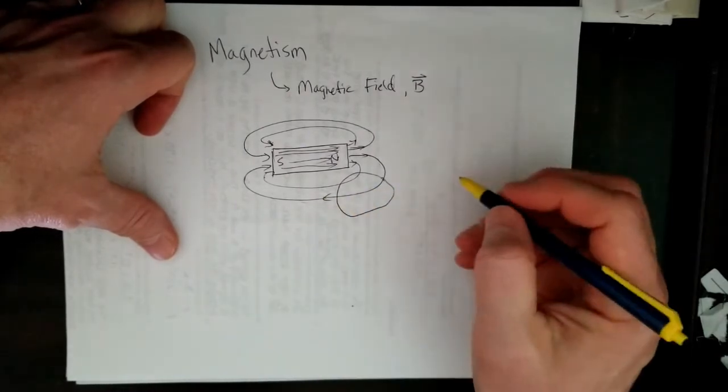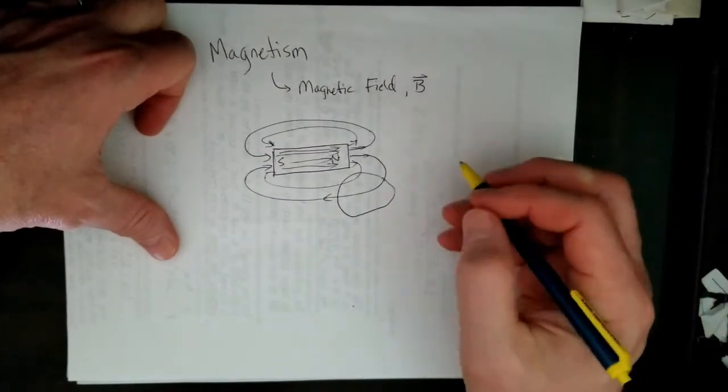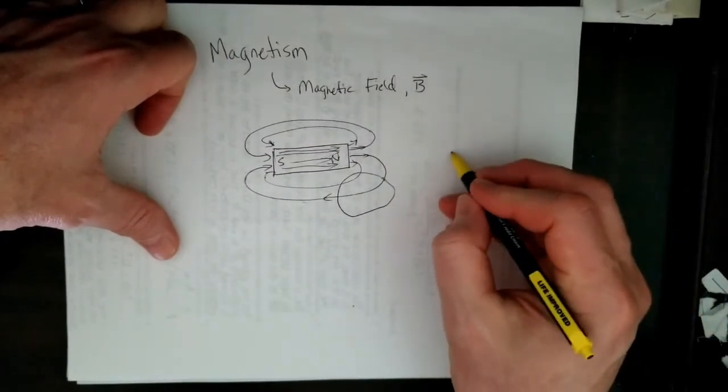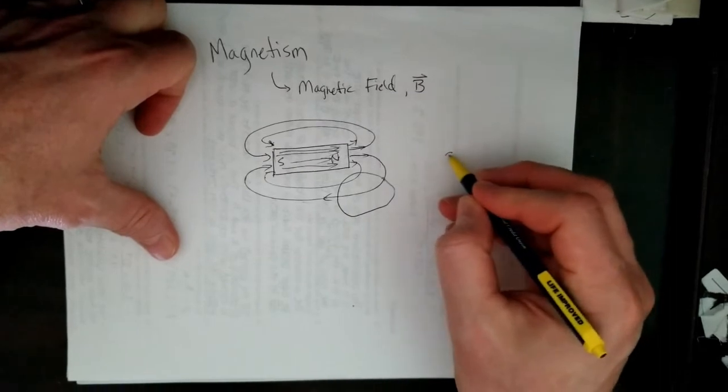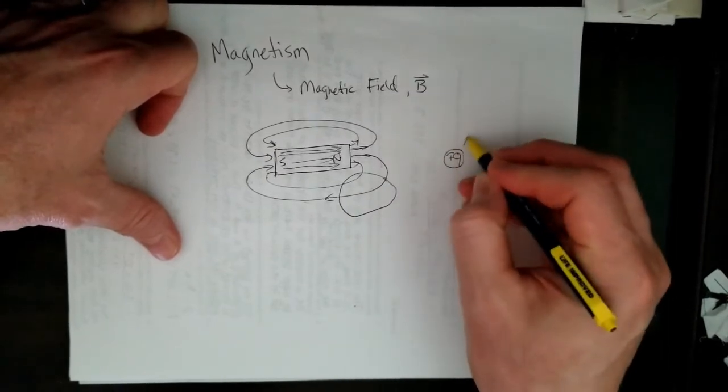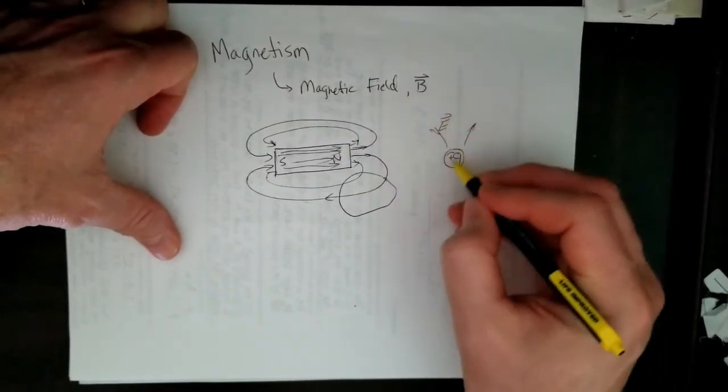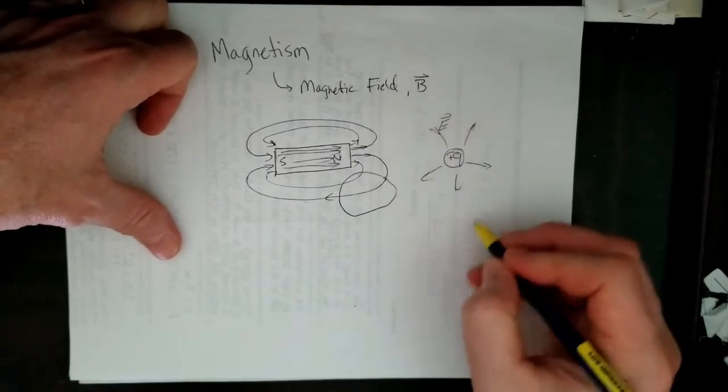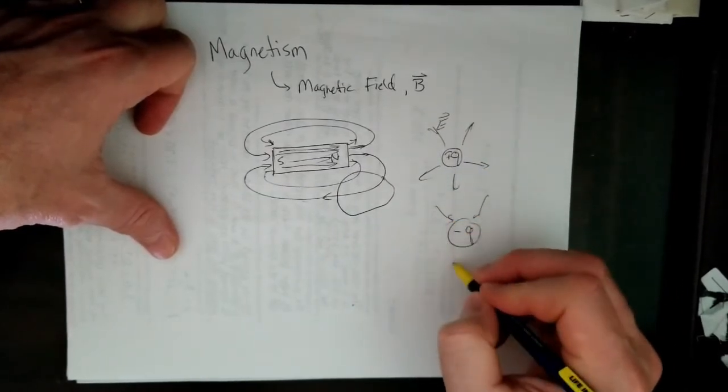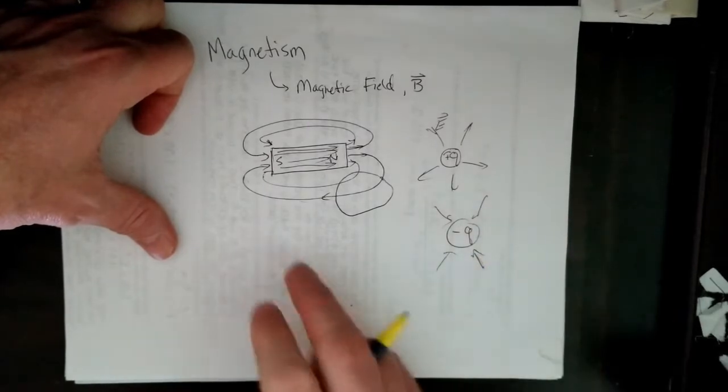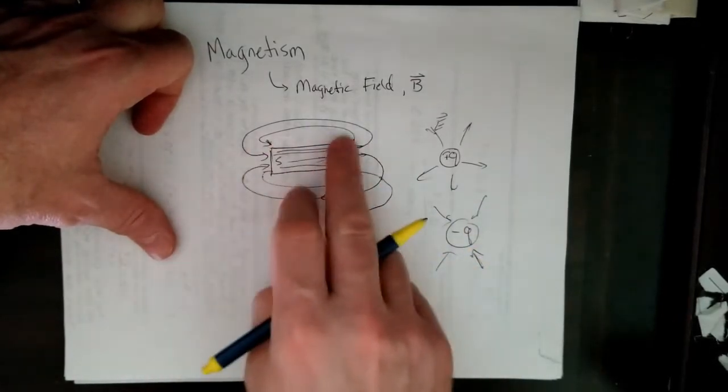No matter what surface, unlike the electricity side of E&M, you can have a positive charge here with electric field flowing away from it, or you're going to have a negative charge with electric field flowing towards it. Magnetic field, it's a continuous loop.